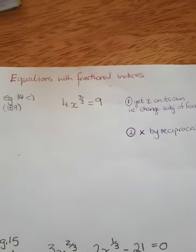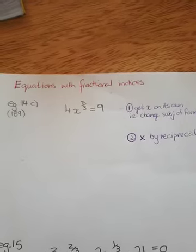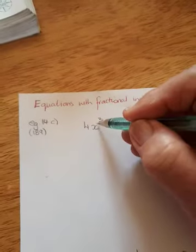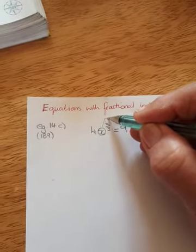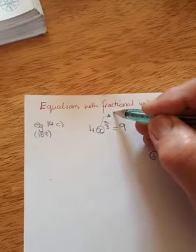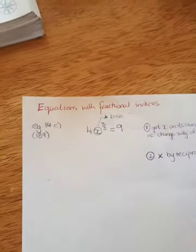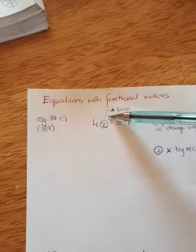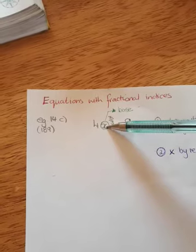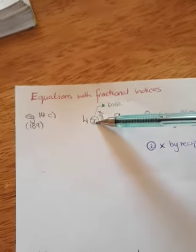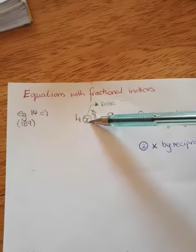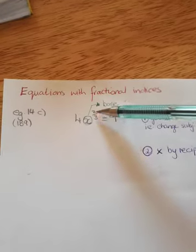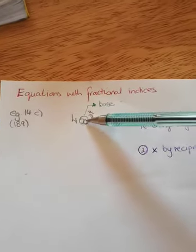Hello viewers, this is the topic of equations with fractional indices. I want to make you aware of the following point: the x or the variable in any of the examples is the base. When you compare that to exponential equations, in exponential equations the x or the variable is actually in the index. So this is how you would recognize the two differences, because you must identify that, since there are different rules. In equations with fractional indices, you can see that your index is a normal fraction and that your variable is in the base.